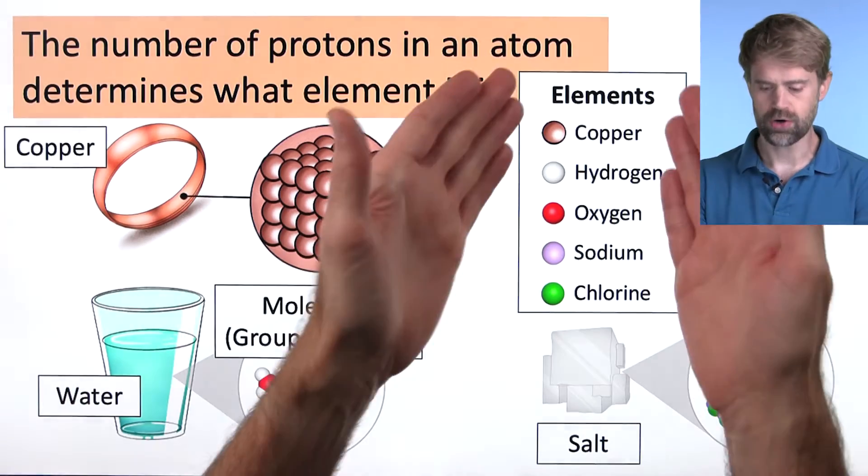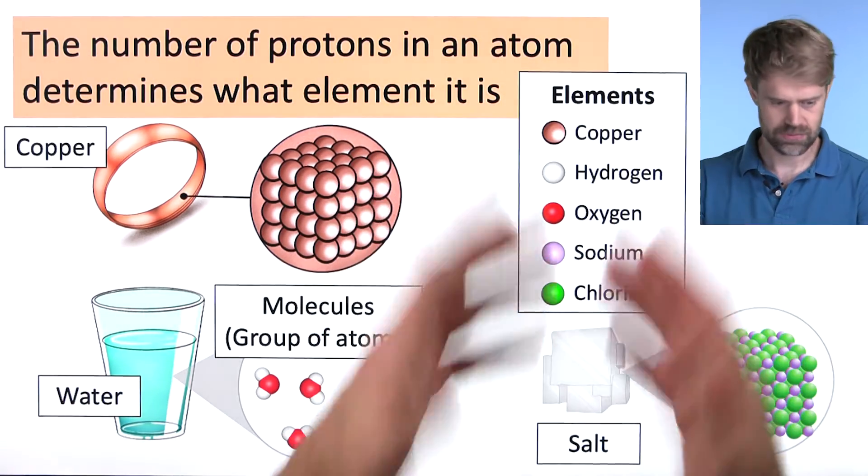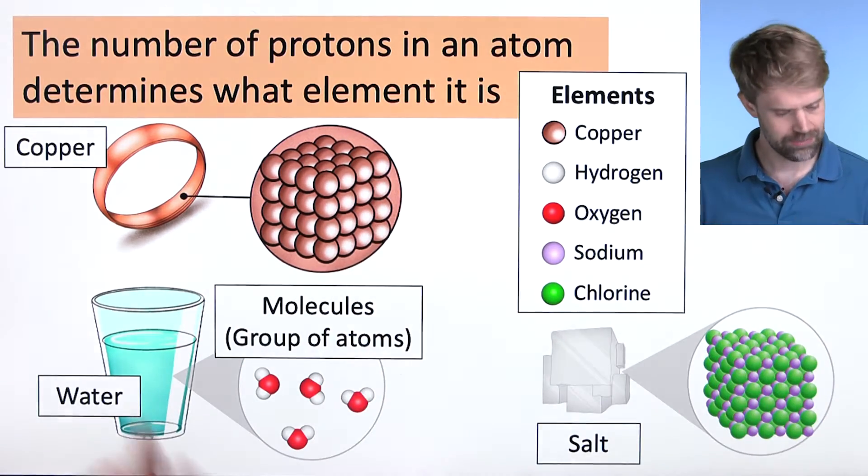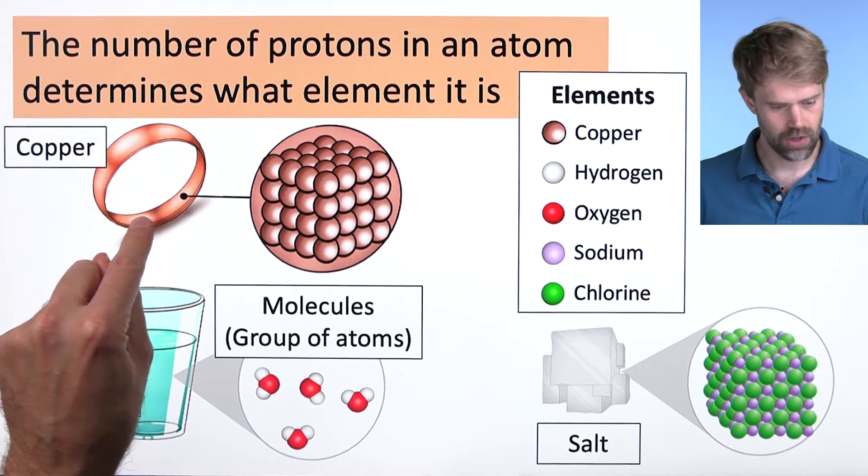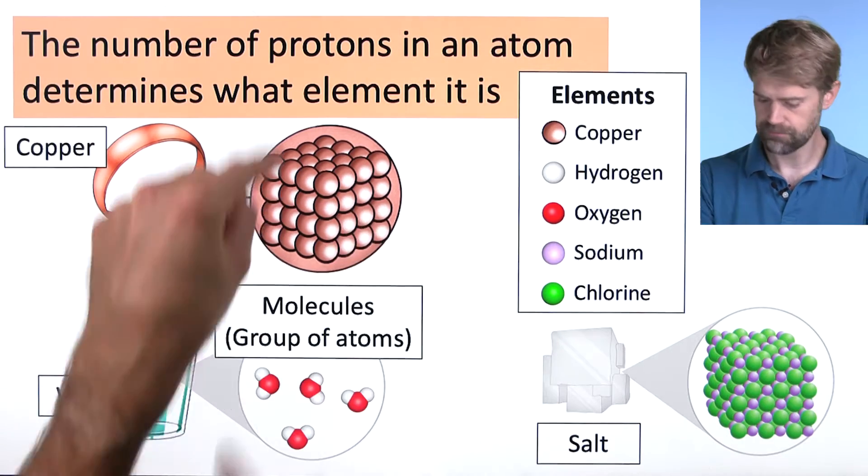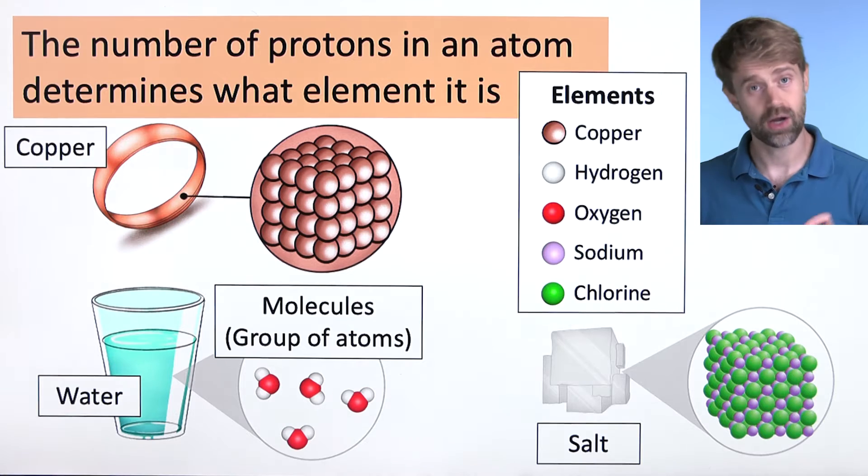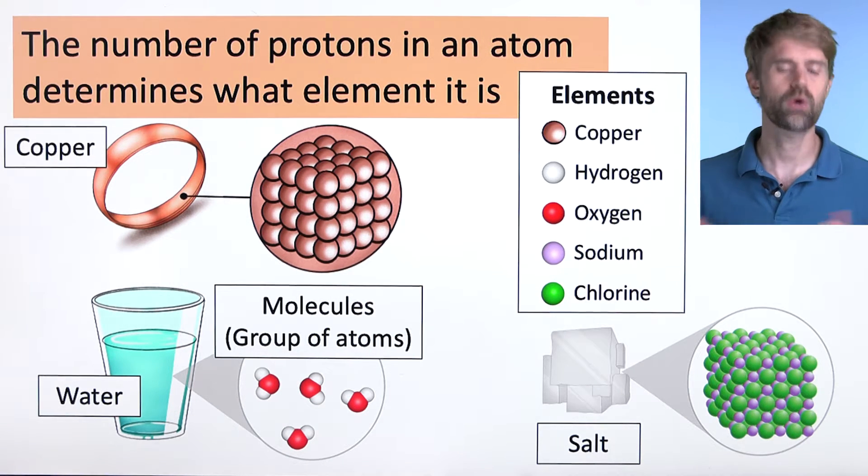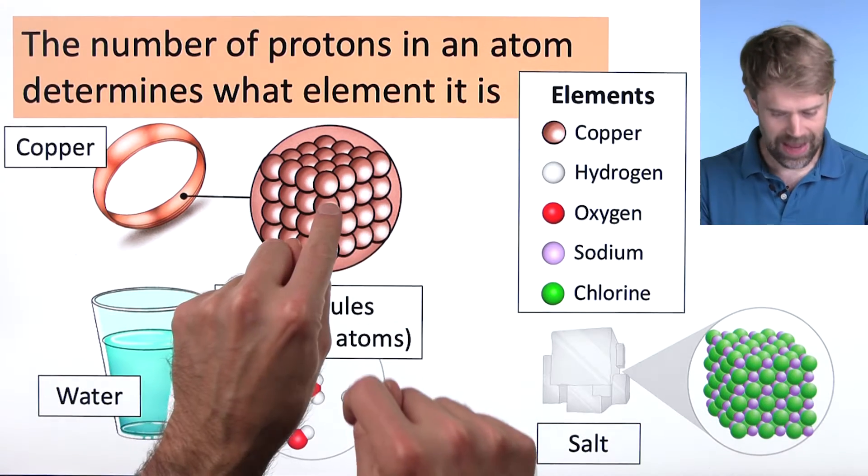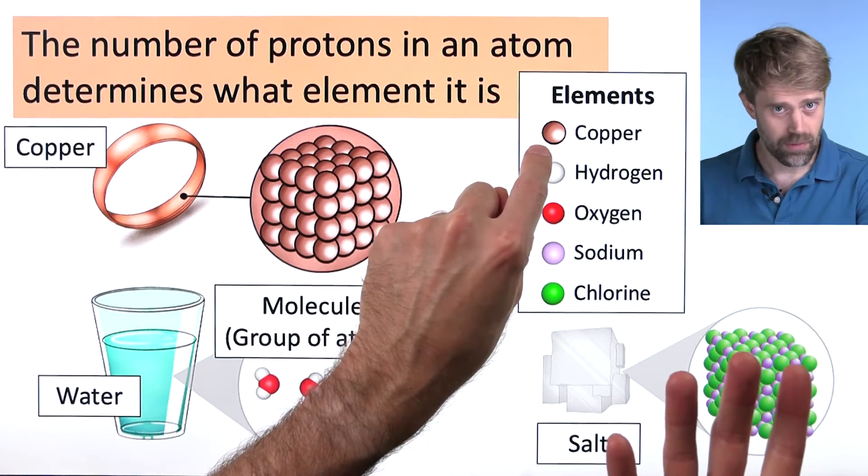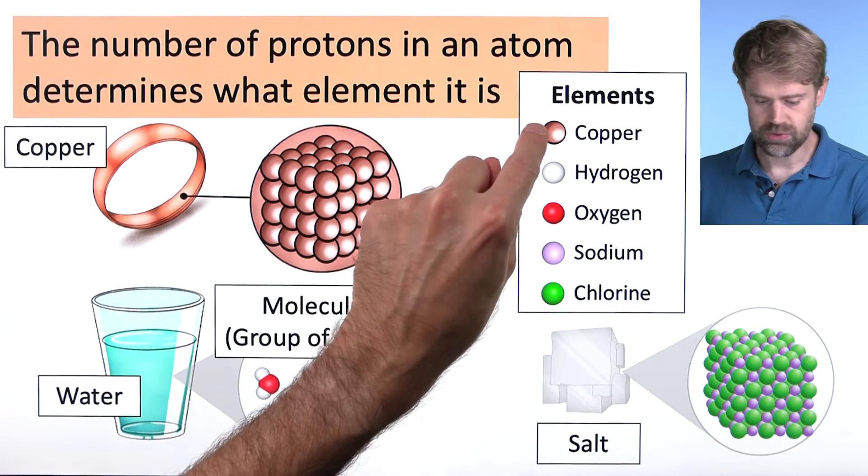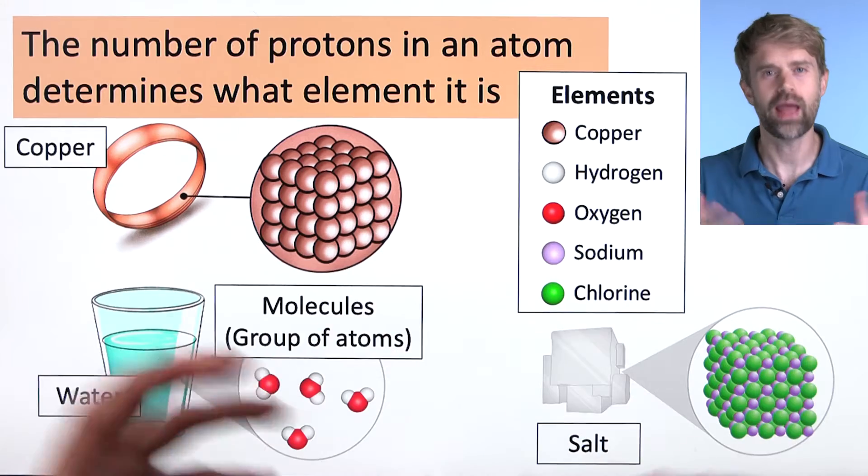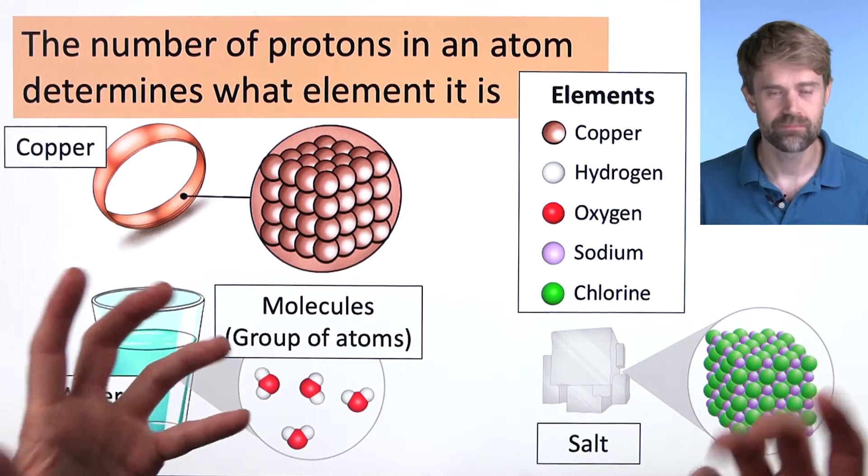We've talked about how there are different types of atoms and these different types of atoms are elements. For example, this pure copper ring would be made of copper atoms or a grain of table salt is made of a combination of sodium and chlorine atoms. But what makes an atom a copper atom? And what's the difference between a copper atom and say a chlorine atom? What makes one element that element?